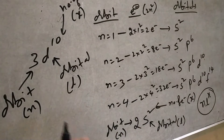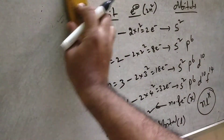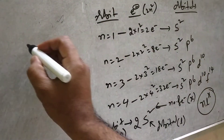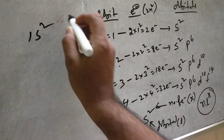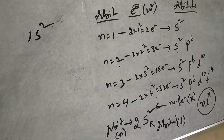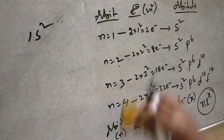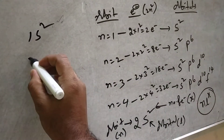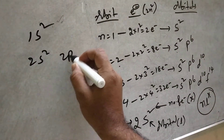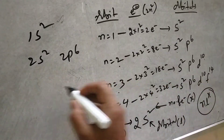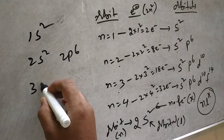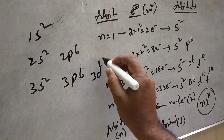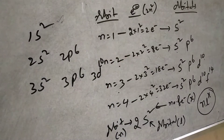Similarly, for the 1st orbit containing S: write 1S2. In the 2nd orbit we have 2 orbitals: 2S2 and 2P6. For the 3rd orbit: 3S2, 3P6, 3D10. Because it contains 3 orbitals, we write it like this.